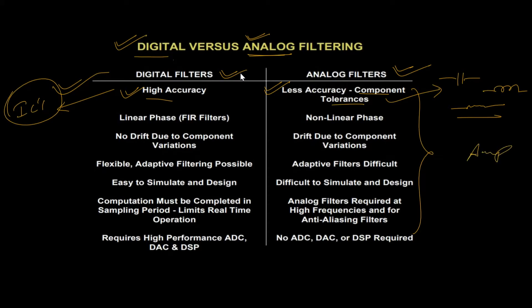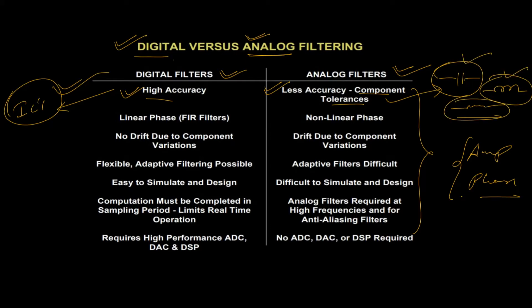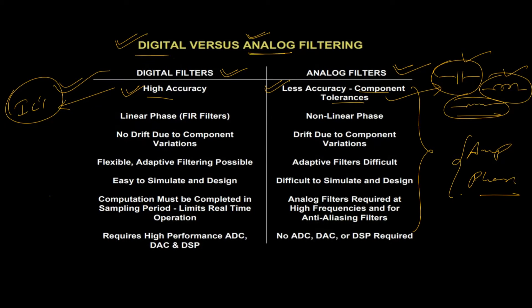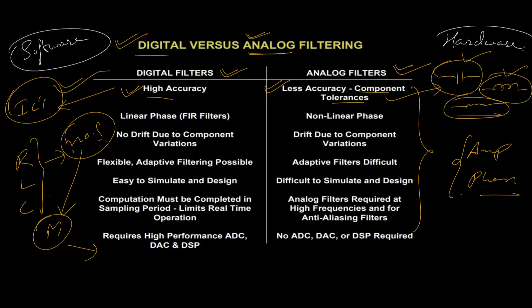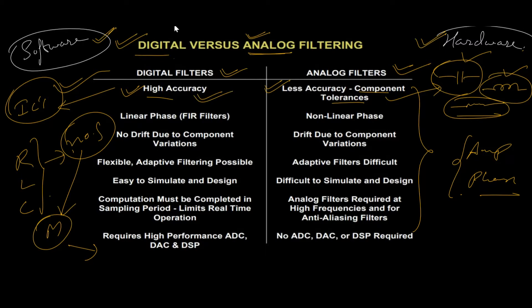In digital filters, characteristics like amplitude and phase are calculated in a similar way as for analog filters. But the key difference is that instead of calculating values of capacitor, inductor, and resistor every time, we just calculate the coefficient values. In digital filters, physical quantities like resistor, inductor, and capacitor are replaced by numbers that reside in memory as filter coefficients. This means we deal only with the software part, and these virtual components offer high accuracy compared to hardware.